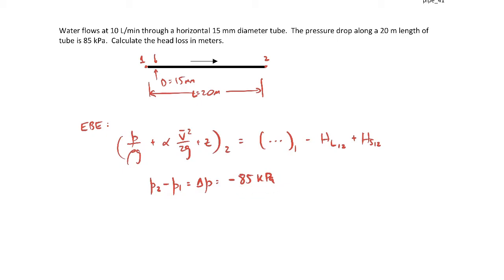Let's continue. The next term, z2 minus z1, is zero because it's a horizontal pipe. The shaft head from one to two is zero because there's no fluid machinery between these points - no pump or turbine or anything like that. We're trying to calculate the head loss, so that's a question mark.